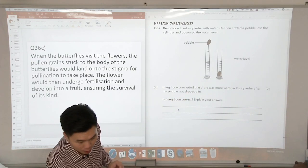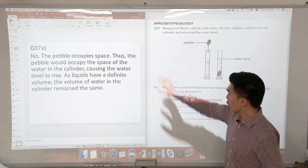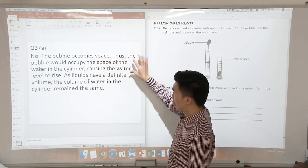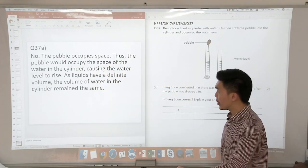So this is how we are going to phrase our answer. We say no, the pebble occupies space. The pebble will occupy the space of the water in the cylinder. So this will cause the water level to rise.